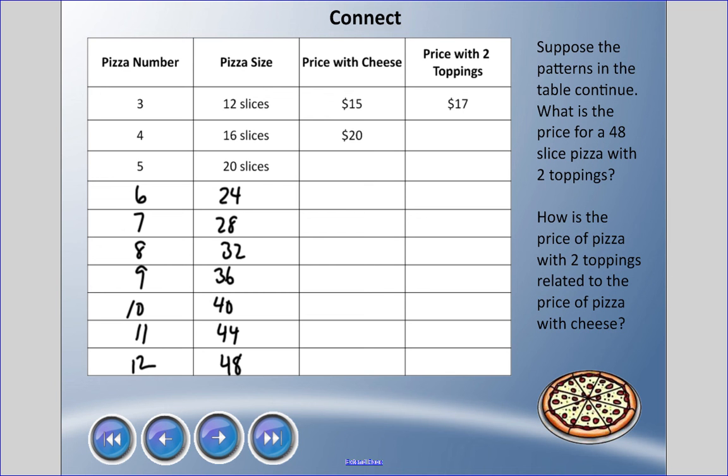We had a pattern rule where we started with price of cheese - I think we started at five, we added five each time. Here we start at 15 and we're going to add five each time: 25, 30, 35, 40, 45, 50, 55. And it costs sixty dollars, right? That's the answer to our first question - what is the price for a 48-slice pizza with cheese? No, that's not what I asked, I asked for two toppings.